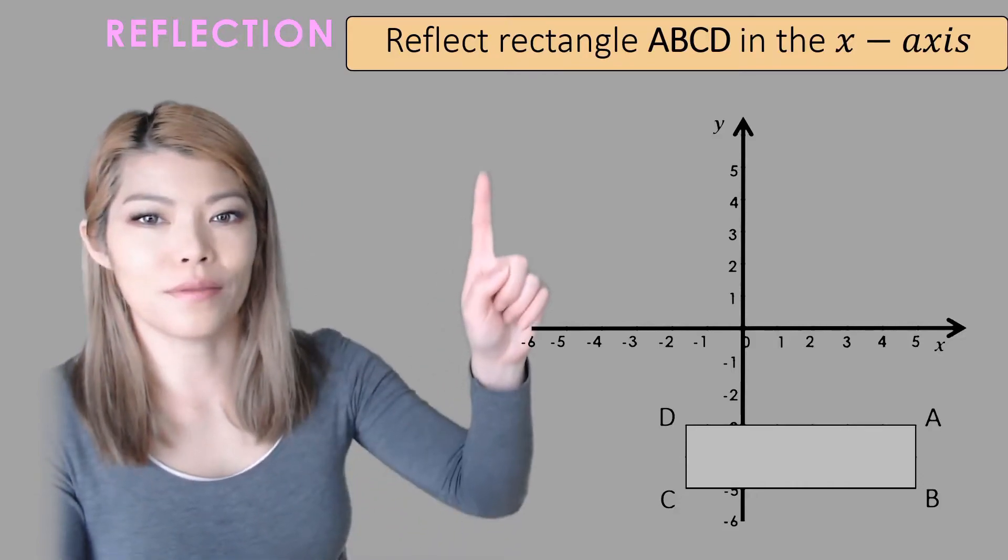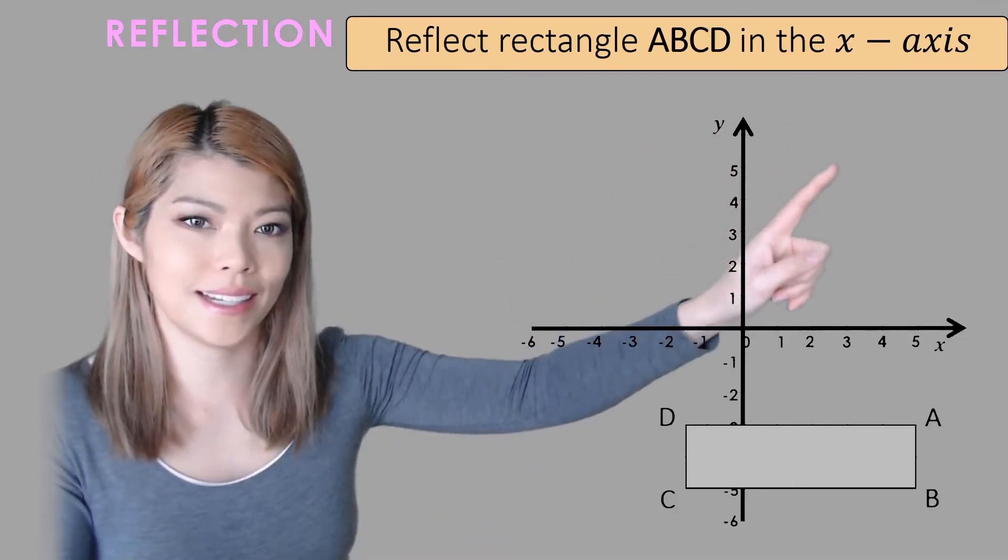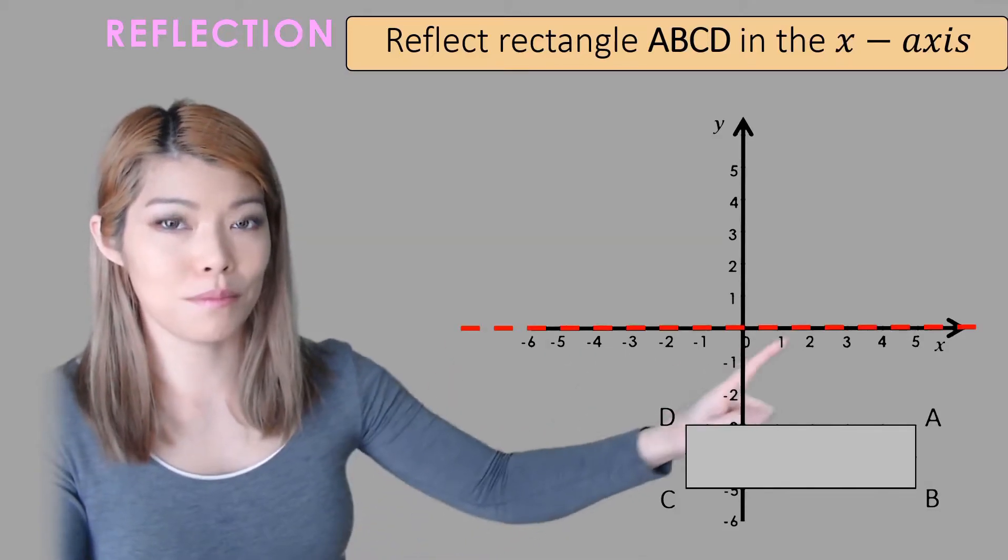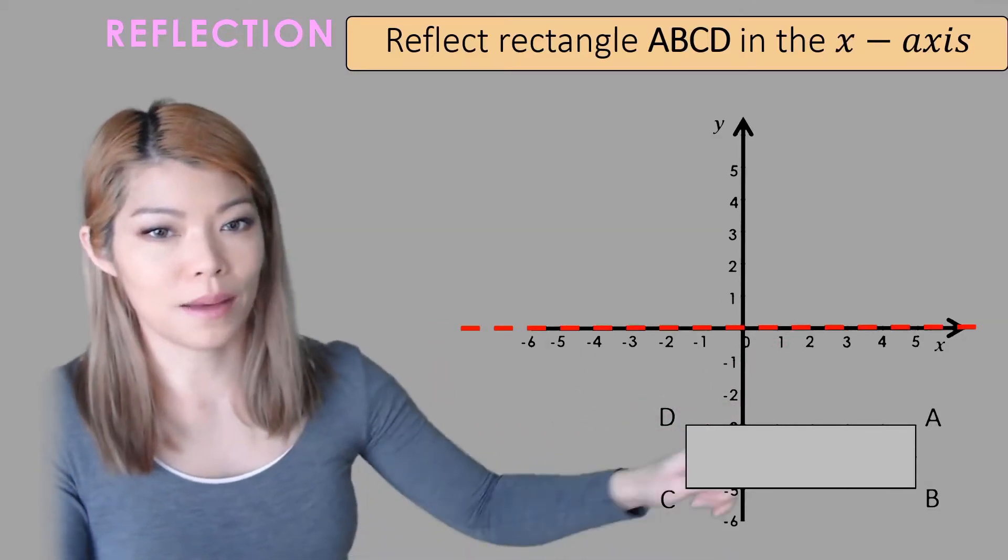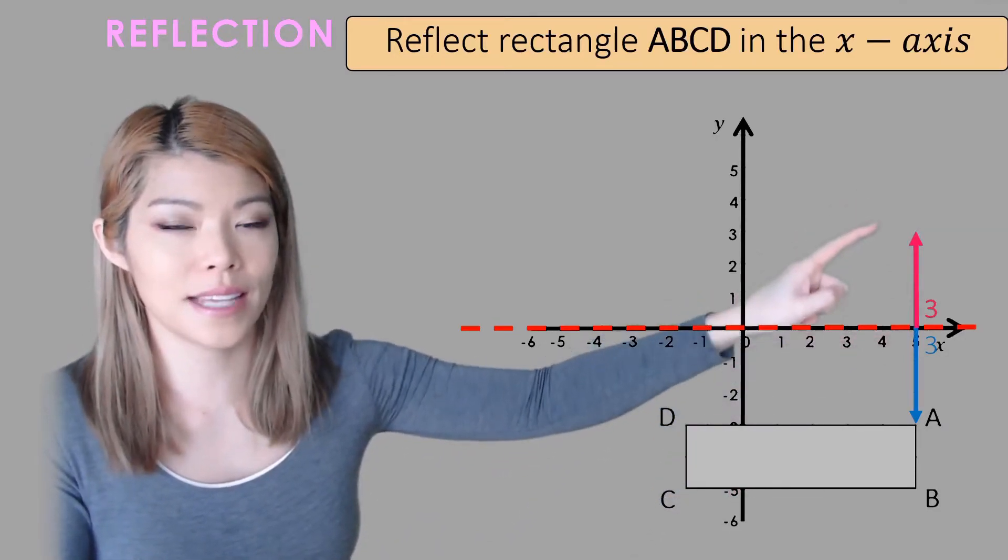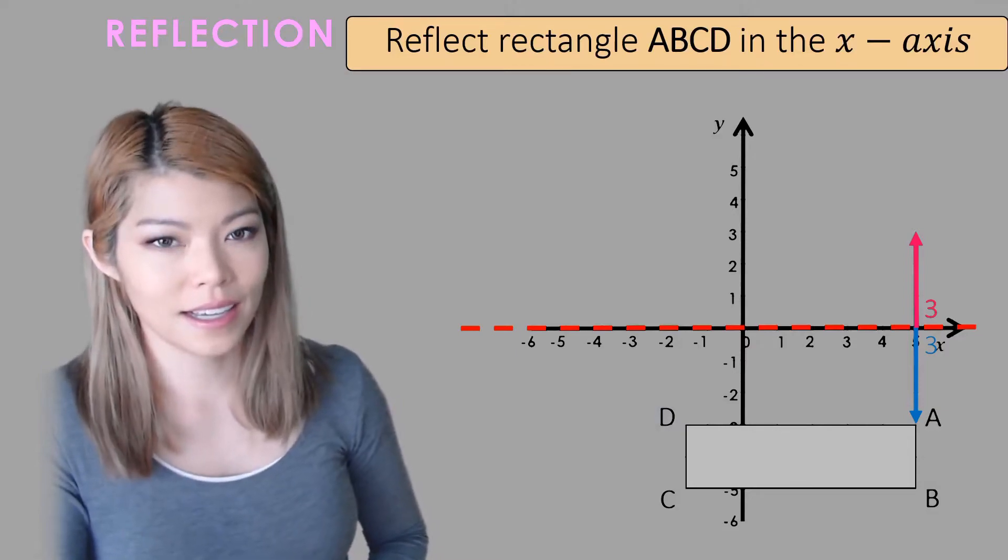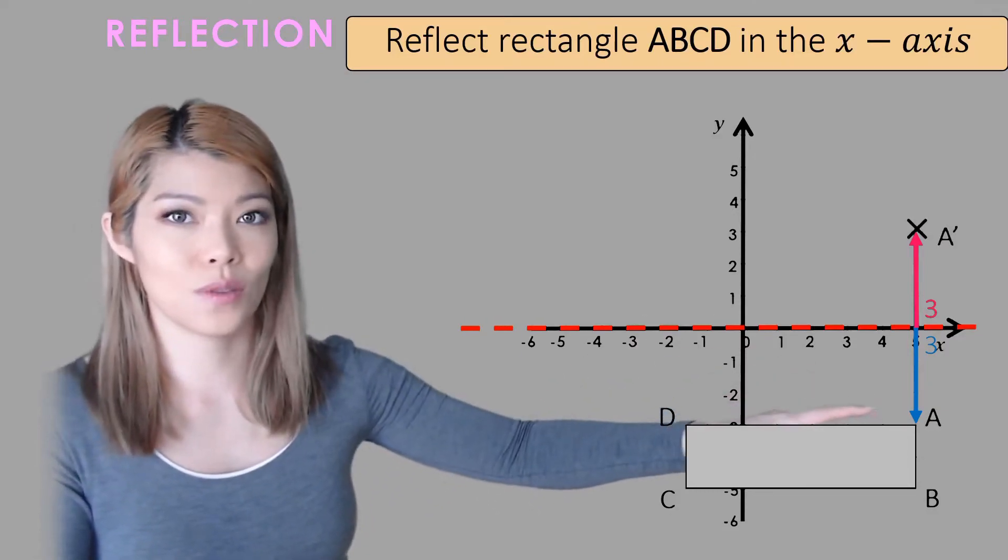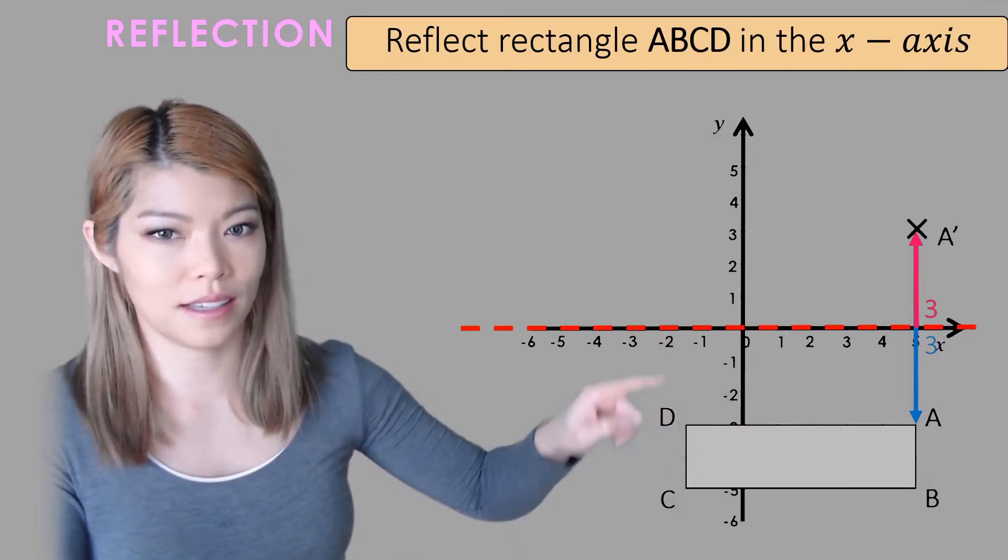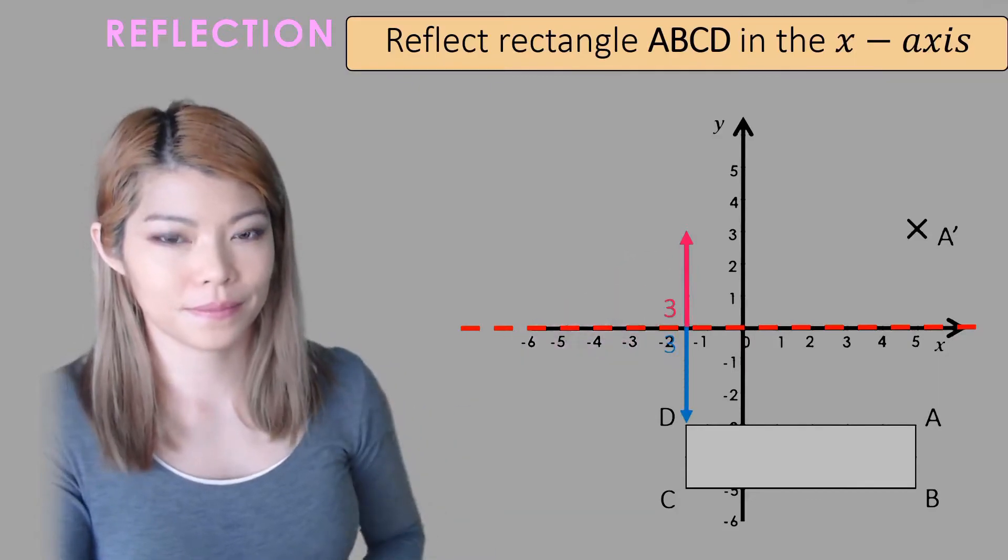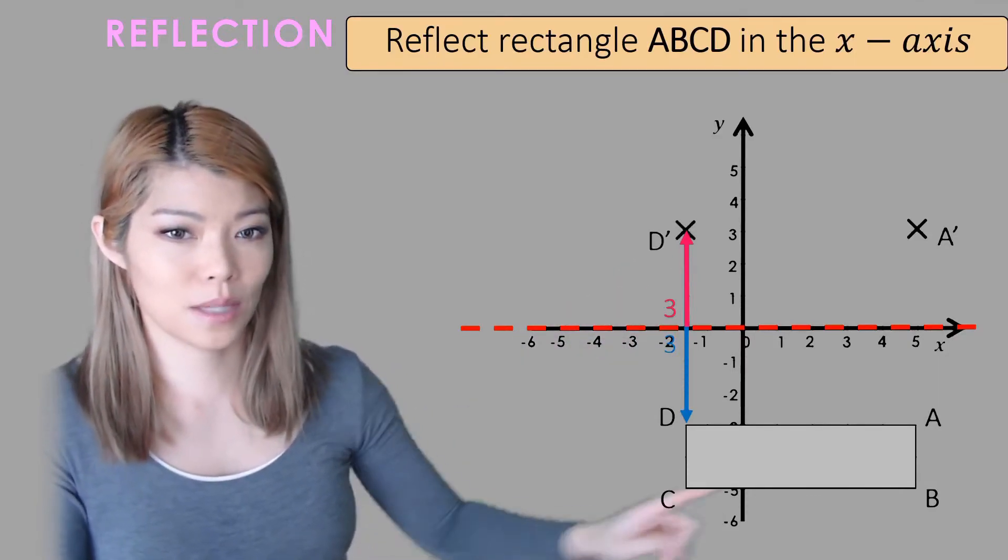Let's do another one. Reflect rectangle A, B, C, D in the x-axis. That means that the x-axis this time is a mirror. So again pick a point A, find out how far it is from the mirror and find the point exactly the same distance on the other side and label that as A'. Now because we did A, the next one that's similar to it is D, same distance. So we're going to just find D next.